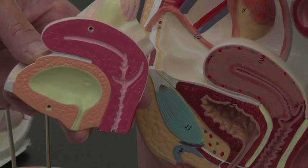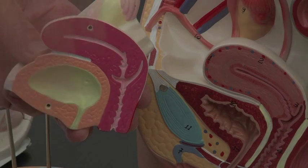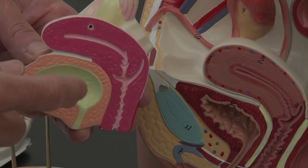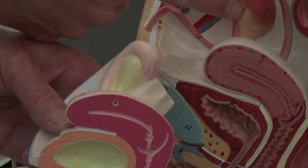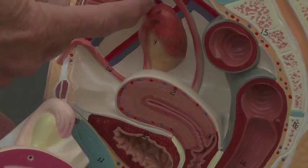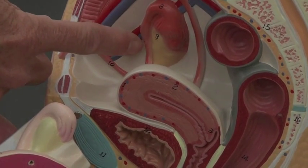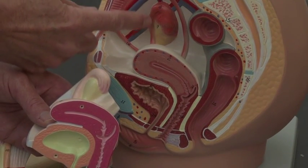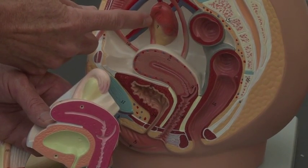Basically what's going to happen is the egg is going to be ovulated from the ovary, gets sucked up by the fimbria into the infundibulum. It will be fertilized out here in the outer third or the ampulla of the ovarian tube or uterine tube.